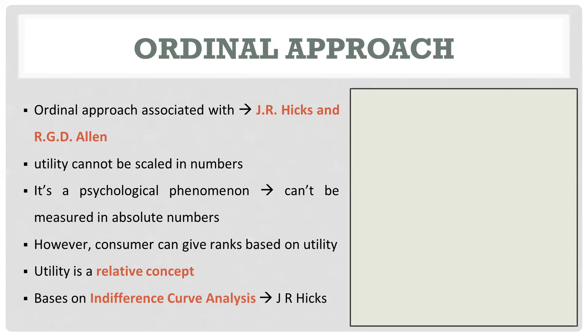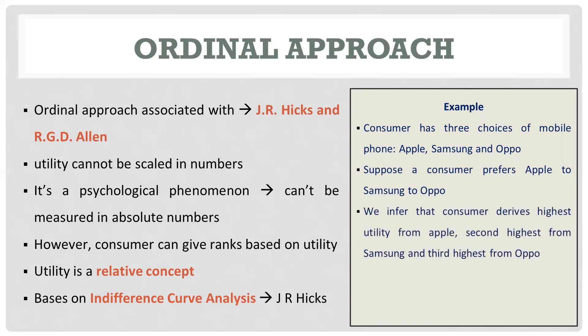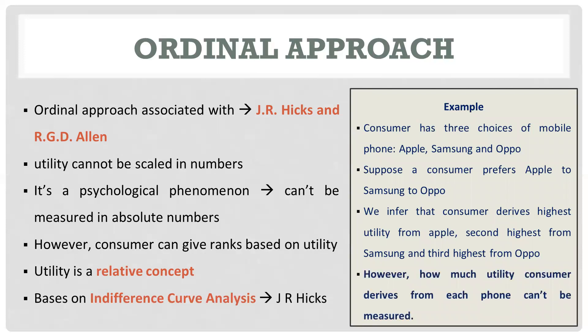Consider this example: suppose a consumer has three choices of mobile phone — Apple, Samsung, and Oppo. Suppose the consumer prefers Apple to Samsung to Oppo. We can infer that the consumer derives the highest utility from Apple, the second highest from Samsung, and the third highest from Oppo.